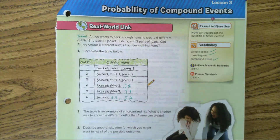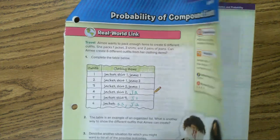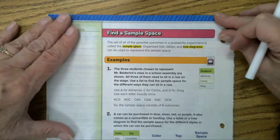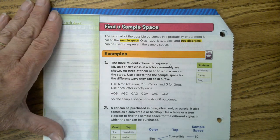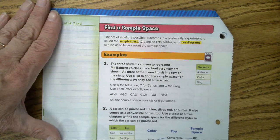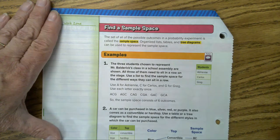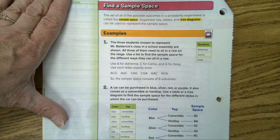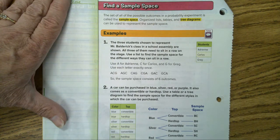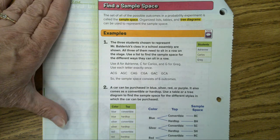On page 734 we get into the nitty-gritty. The set of all possible outcomes in a probability experiment is called the sample space. Organized lists, tables, and tree diagrams can be used to represent the sample space. Number one: three students chosen to represent Mr. Balderick's class in a school assembly all need to sit in a row on the stage. Use a list to find the sample space for the different ways they can sit.